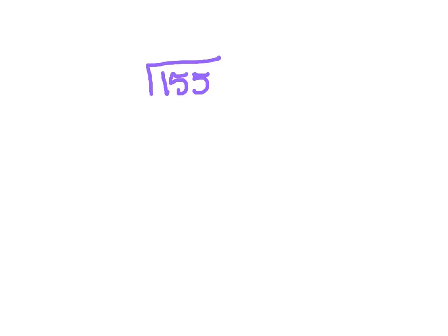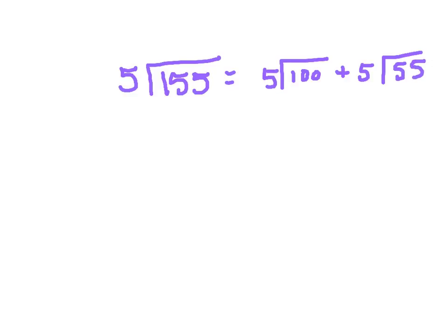Check this story problem out. There are 155 cornstalks total and they're in 5 rows. Each row has the same number of cornstalks. How many cornstalks are in each row? There are 155 total and 5 rows, so we divide 155 by 5. Break it up: 5 goes into 100 twenty times, plus 5 goes into 55 eleven times. 20 plus 11 equals 31 cornstalks in each row.